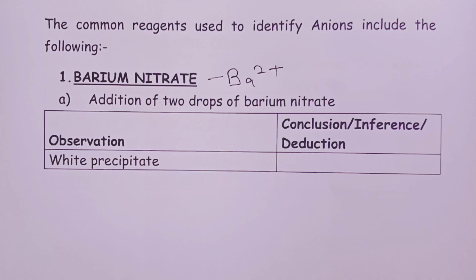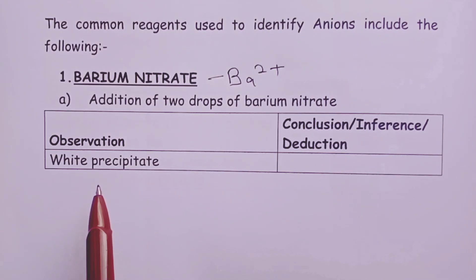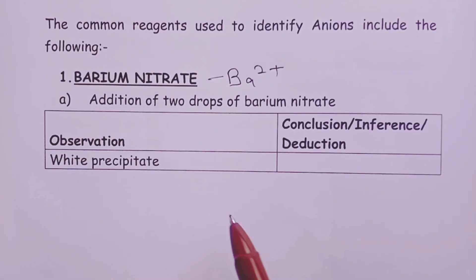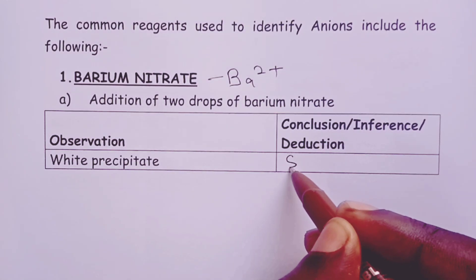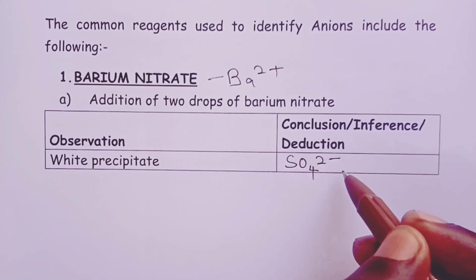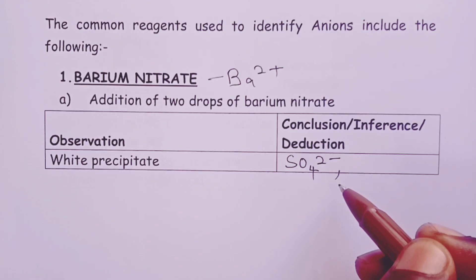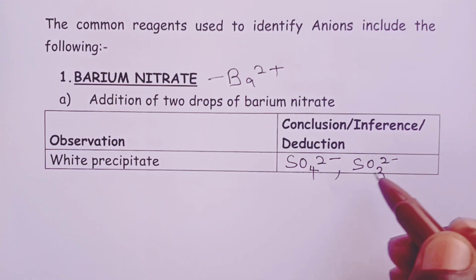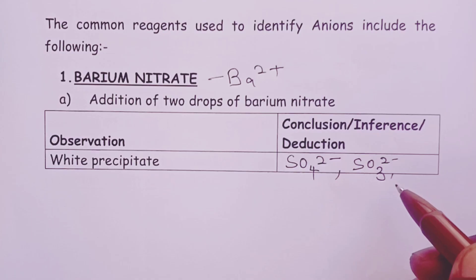When we see a white precipitate on addition of two drops of barium nitrate, the student is supposed to use their understanding of solubility rules and realize that the white precipitate results from formation of insoluble barium salts. The conclusion would be that the white precipitate is probably due to presence of the sulfate ion, since barium sulfate is insoluble. Barium sulfite is also insoluble, so white precipitate would also signify presence of sulfite ions.